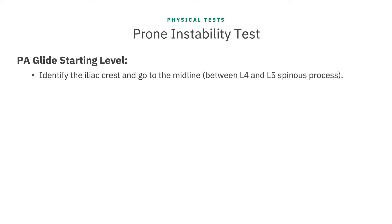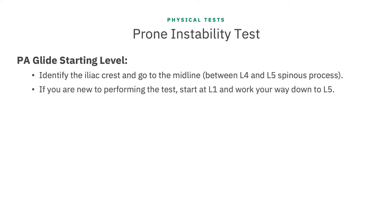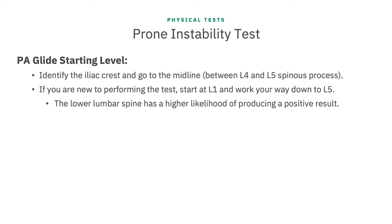To identify the proper starting level, first we'll identify the iliac crest and come back around to the midline. When we do that, we know that we should be between the L4 and L5 spinous process. It doesn't matter if you decide to start at L5 and work your way up to L1, or count up to L1 and work your way back down. If you are performing this test for the first time, we suggest that you start at L1. It'll give you a good feel of learning how to perform the glides at the higher levels before you work to the lower levels where you're more likely to find a positive result.